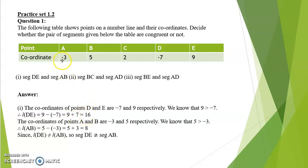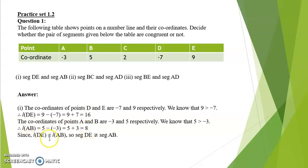The coordinate of A is negative 3 and B is 5. We know that 5 is greater than negative 3, therefore length AB is equal to 5 minus negative 3, which is 5 plus 3, equal to 8. Since 16 and 8 are not the same, length DE is not equal to length AB, so segment DE is not congruent to segment AB.